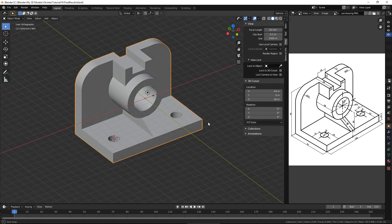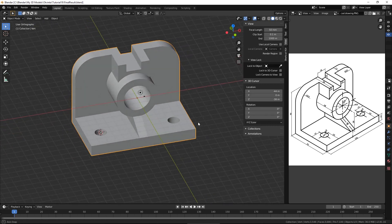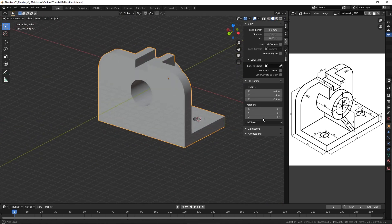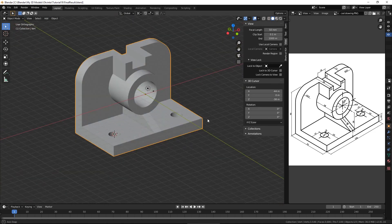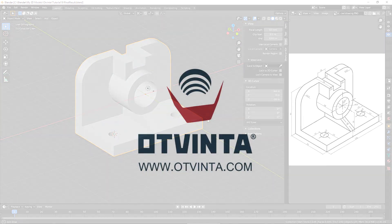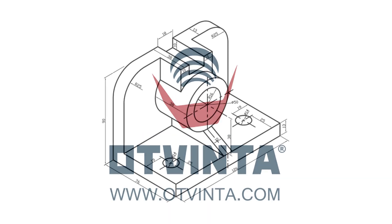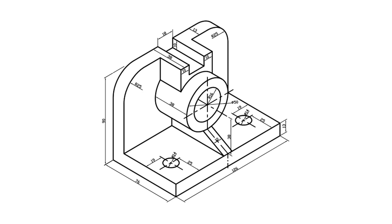In this tutorial, you will learn how to model a 3D printable part based on a technical drawing in Blender 2.81. We are going to use a drawing downloaded from grabcad.com. We will model this part without the use of the boolean modifier, and make sure the final model has no flaws from a 3D printing point of view.